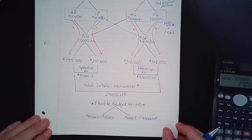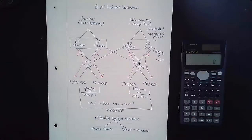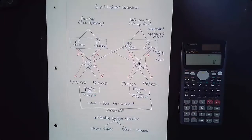This is how we calculate the direct labor variances using the diamond approach. You don't have to use this approach — if you want to use the formulas or the column approach, feel free. Any method you use should end up in the exact same place; if it doesn't, you know you're doing something wrong.